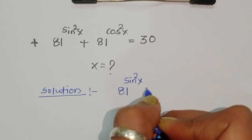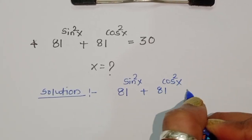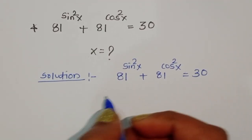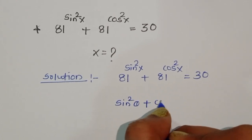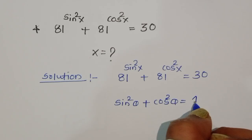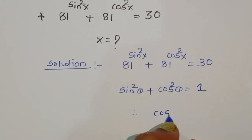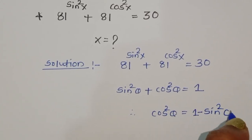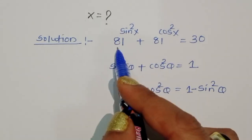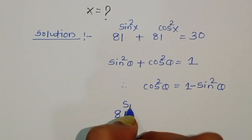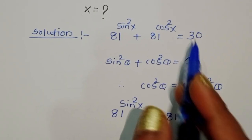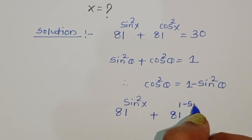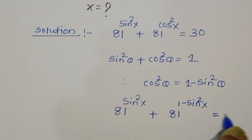81^(sin²x) + 81^(cos²x) = 30. This is the question. We know the formula sin²θ + cos²θ = 1, therefore cos²θ = 1 - sin²θ. Using this formula, we substitute cos²x with 1 - sin²x, giving us 81^(sin²x) + 81^(1 - sin²x) = 30.